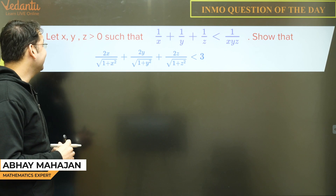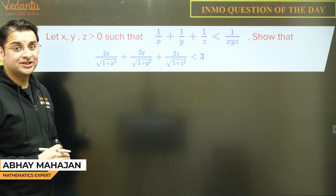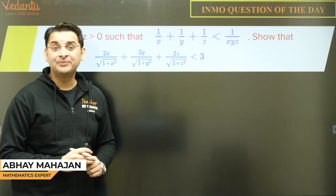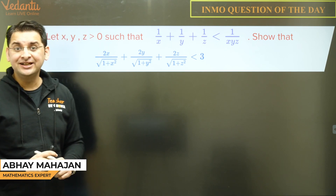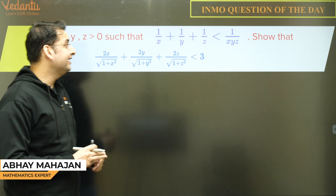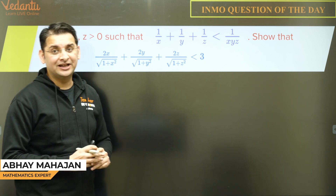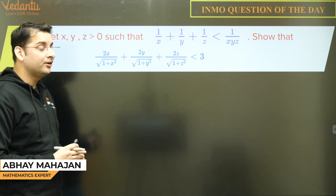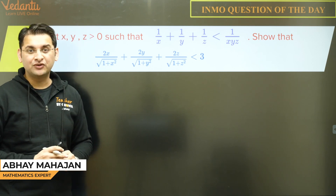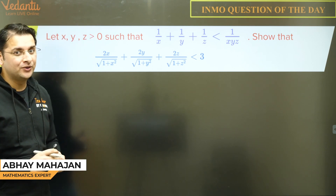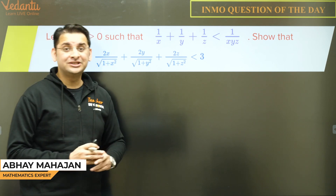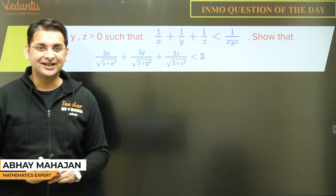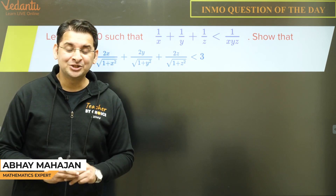Let x, y, z be greater than 0 such that 1/x + 1/y + 1/z is less than 1/(xyz). Show that 2x/√(1+x²) + 2y/√(1+y²) + 2z/√(1+z²) is less than 3.